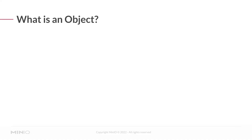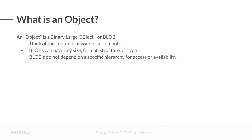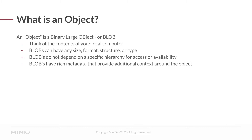A term we're going to use a lot in this module is 'object.' Object typically refers to the binary large object, or blob. Don't let 'large' throw you off — it really is just the contents of your local computer, the regular files and media resources you interact with on a daily basis. They can have any size, format, structure, or type, and they don't depend on a specific hierarchy for access or availability. One important thing that distinguishes the blob from other data structures is that blobs have rich metadata, which often provides additional context around that object — maybe what it is or how it was created.